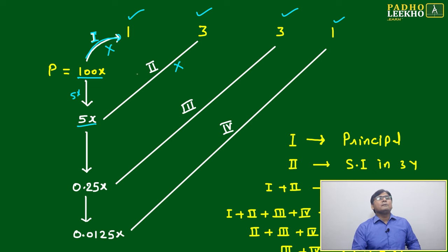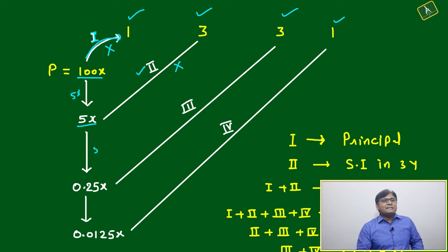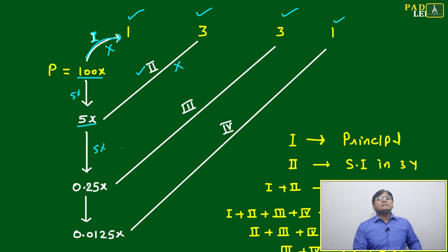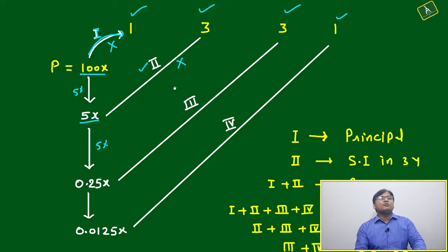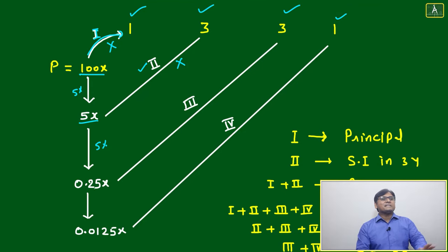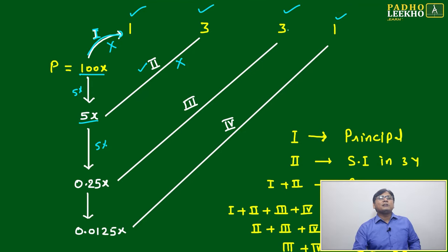Line 2 is 5x × 3. Again you take 5% interest on 5x — the same annual rate of 5% — which gives 0.25x. You multiply it by 3, and that becomes your Line 3.